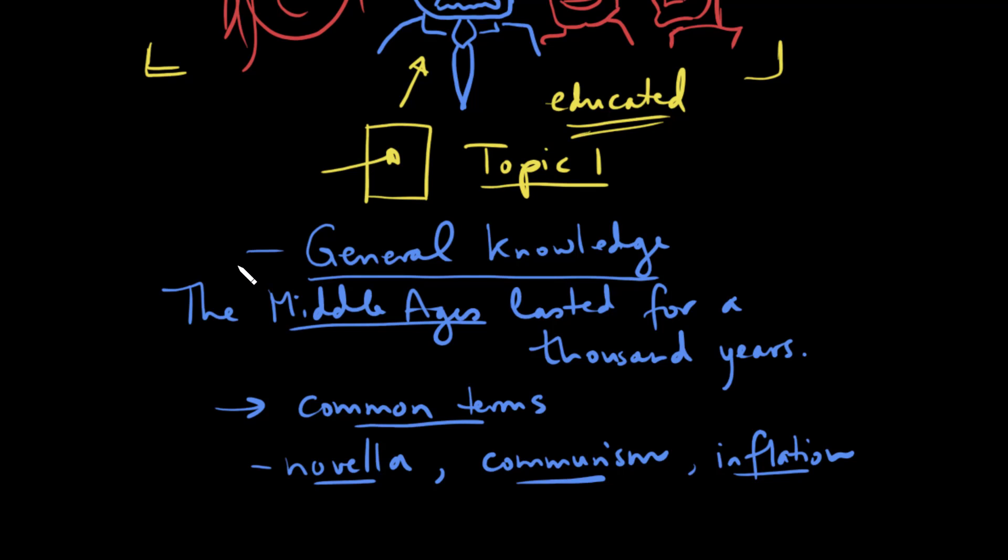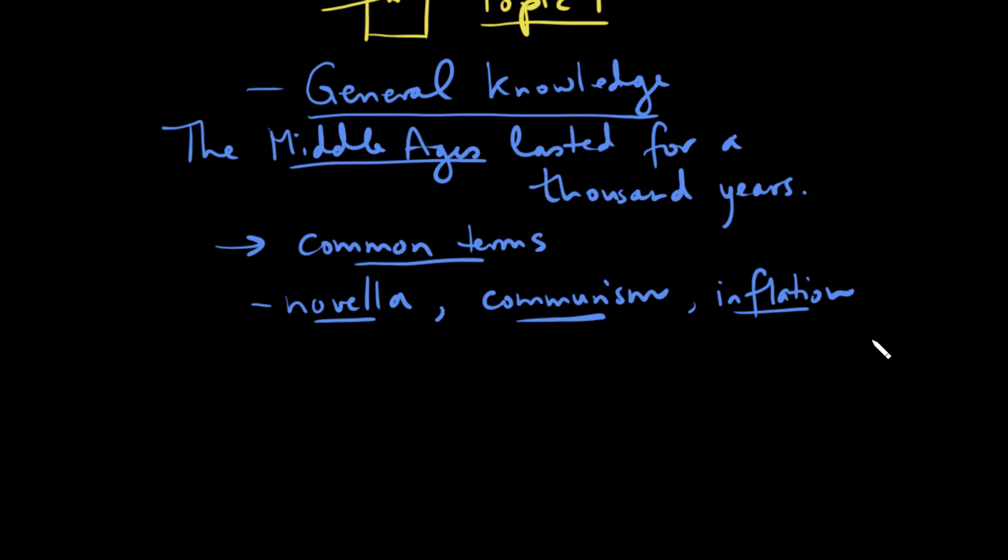But of course there are going to be exceptions to this, and here are some examples of terms that you may want to define. Let's say you're writing a history paper and you're talking about the annexation of Austria by Nazi Germany in 1938, and you use the term Anschluss. So Anschluss, which refers to this annexation. Well, your readership might not be familiar with that.